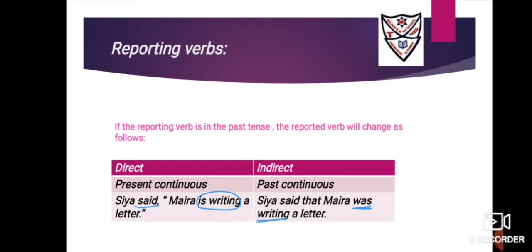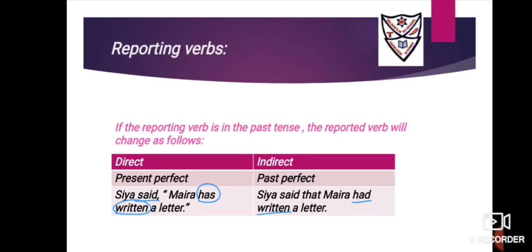Next category: if the reported verb is present continuous, it will change to past continuous. Example: 'Siya said, Myra is writing a letter.' Step one: underline 'said,' circle 'is writing.' It will change to 'was writing' because present continuous changes to past continuous. Answer: 'Siya said that Myra was writing a letter.'